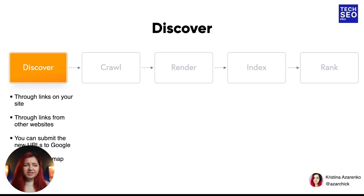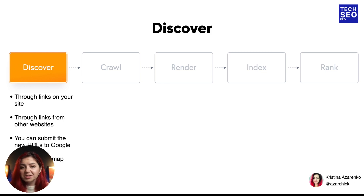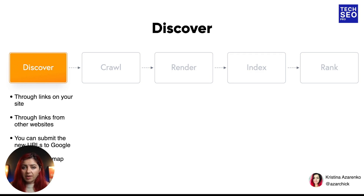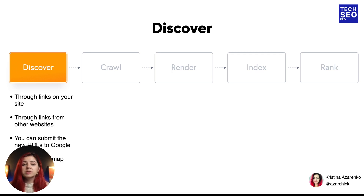You can discover a house intentionally or unintentionally — you can hear about it from a friend or someone else. In the same way, Google discovers pages by following internal links pointing to them, links from other websites pointing to them, through your XML sitemap, through your submission to Google, or it just revisits a page it has already crawled before.